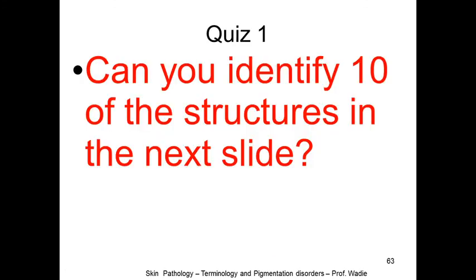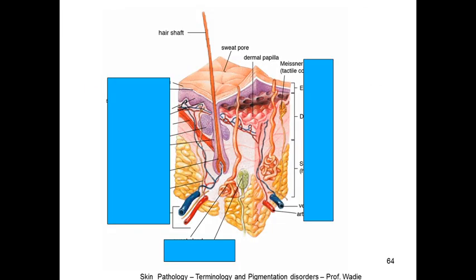That is it for the terminology. You can see there are many new words and new terms that you need to revise — go through them once, twice, again and again. Now we come to the quiz section. Can you identify 10 of the structures in the next slide? Try to name what you see — some are very simple and some require going back to read.